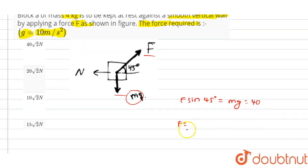We will write the value of force as F equals 40 divided by sin 45 degrees, so that will be equals to 40 into root 2 N.